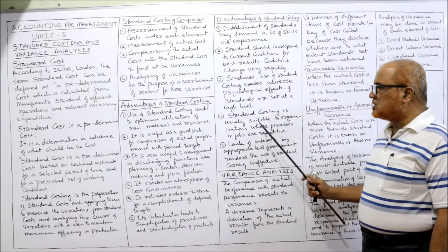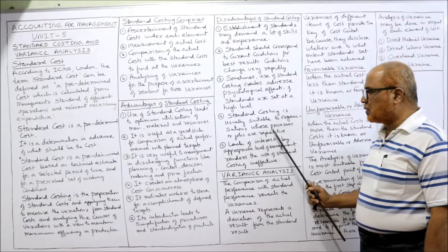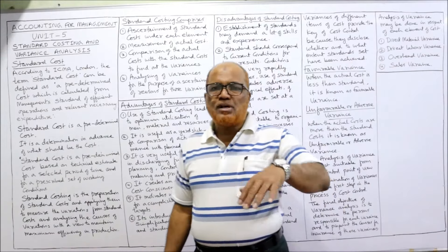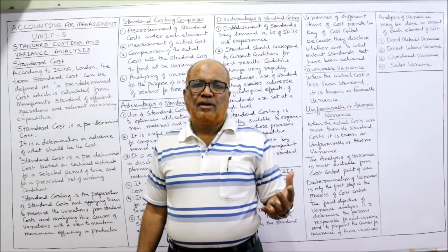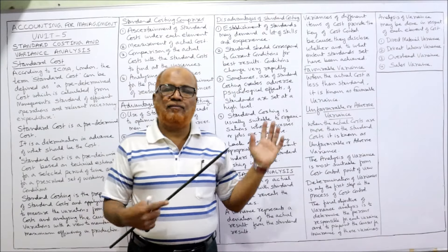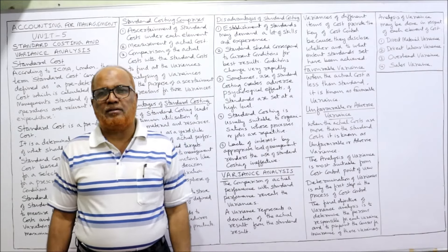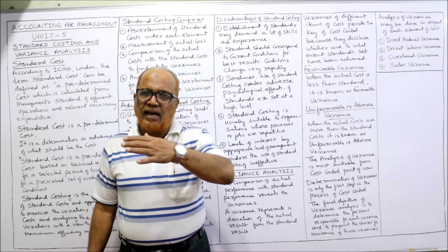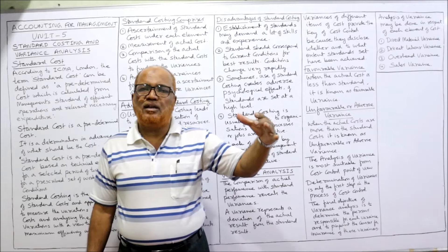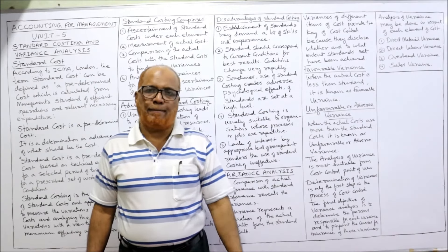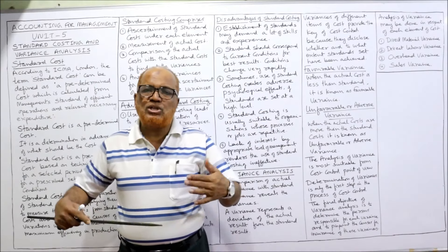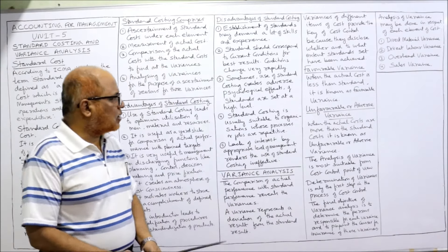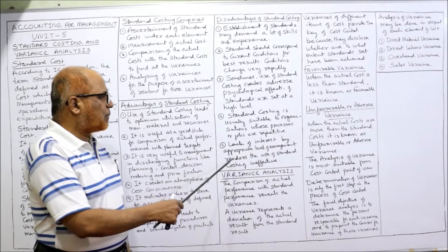Standard costing is usually suitable only for organizations whose procedures or jobs are repetitive. If the jobs are unique, then standard costing cannot be applied. Standard costing can be applied only where the same type of work is continued in a repetitive manner and the same procedure is adopted.